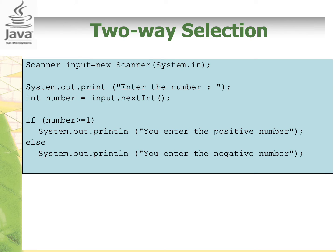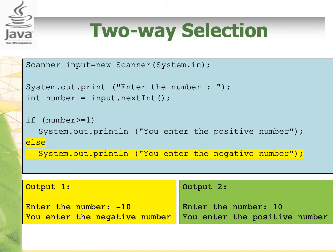Let's look at this example. We use a Scanner called input and the program asks the user to enter a number. If the number entered is larger than or equal to 1, it will display 'you entered a positive number.' If the user enters a number less than 1, it will display 'you entered a negative number.' If the user enters minus 10, the if condition is false, so it goes straight to the else and displays 'you entered a negative number.' If we enter 10, the condition is true, so it displays 'you entered a positive number.'